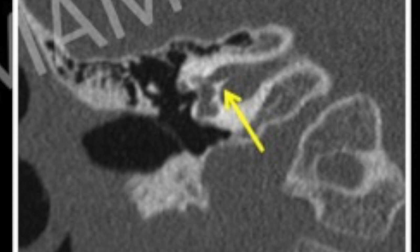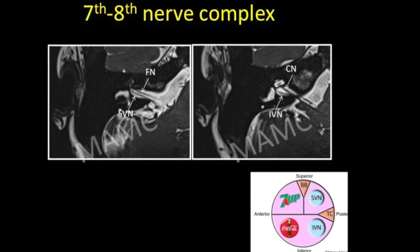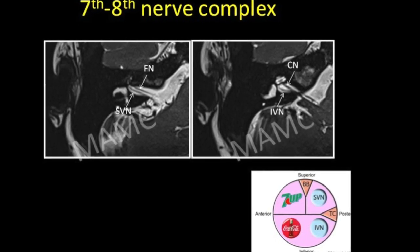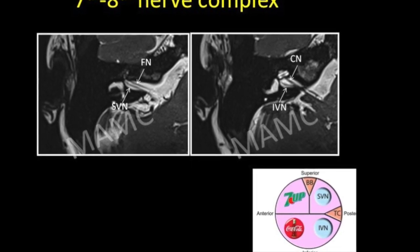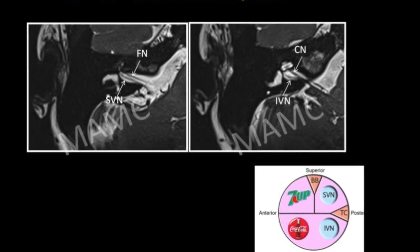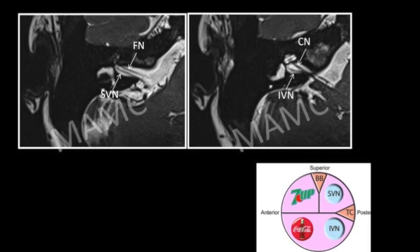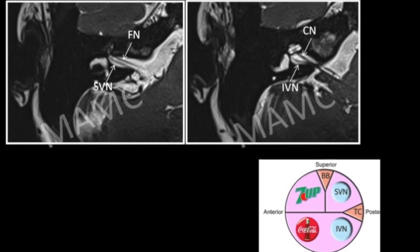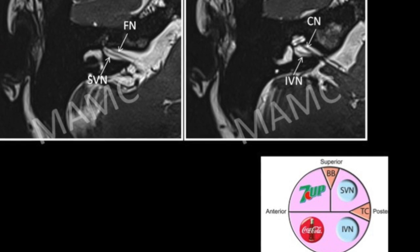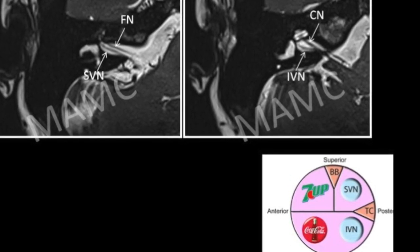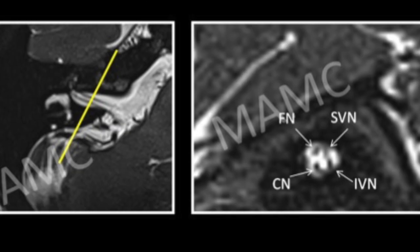The nerves can be directly seen on MR. Superiorly we have the facial and superior vestibular nerves in the superior part of the IAC, and inferiorly the cochlear nerve and inferior vestibular nerve. A mnemonic to remember that the seventh nerve lies up and the eighth nerve lies down is 'seven up and coke down.' In the superior part of the IAC the facial and superior vestibular nerves appear as two parallel lines, while in the inferior part the cochlear and inferior vestibular nerves appear as two intersecting or diverging lines. On MR, a sagittal oblique T2-weighted image cut perpendicular to the nerves within the IAC can depict all four nerves — facial, superior vestibular, cochlear, and inferior vestibular — in cross-section, with the facial and cochlear anteriorly and the superior and inferior vestibular nerves posteriorly.